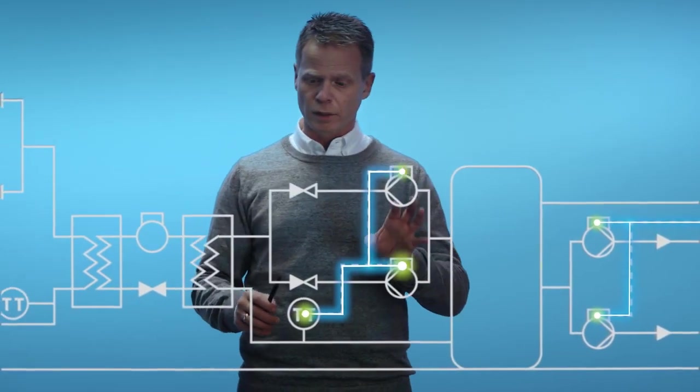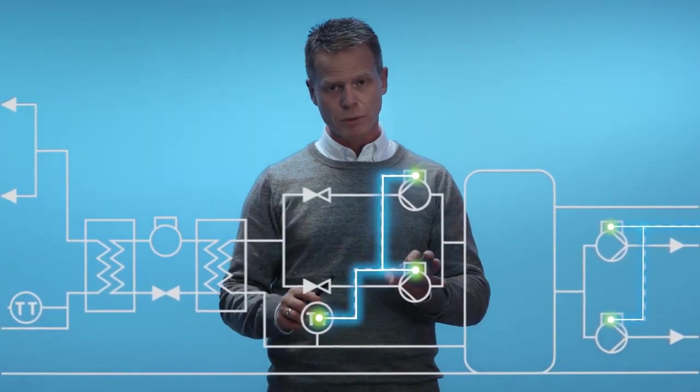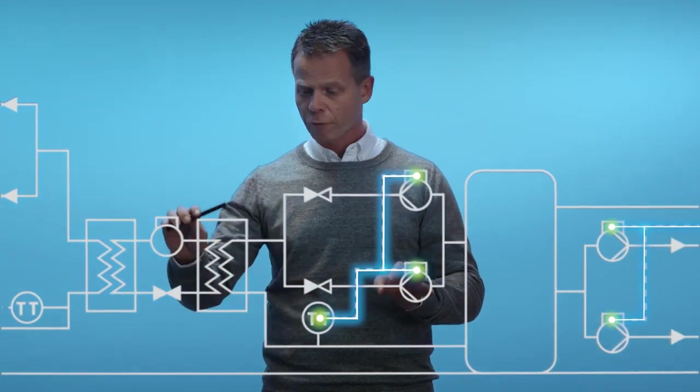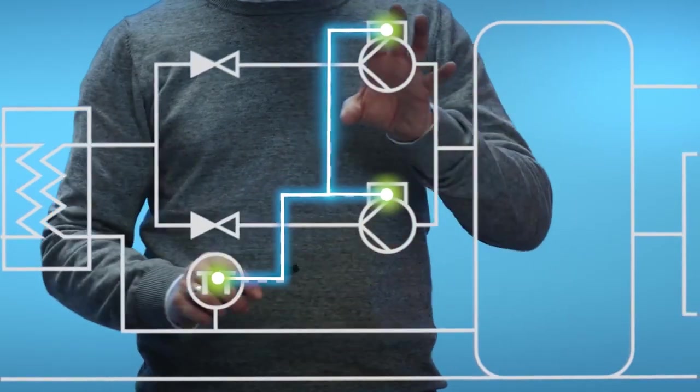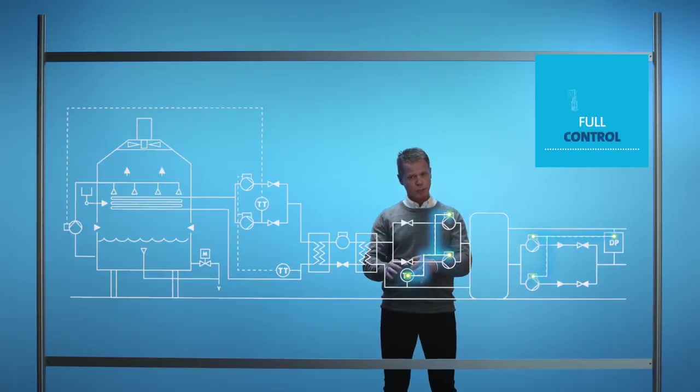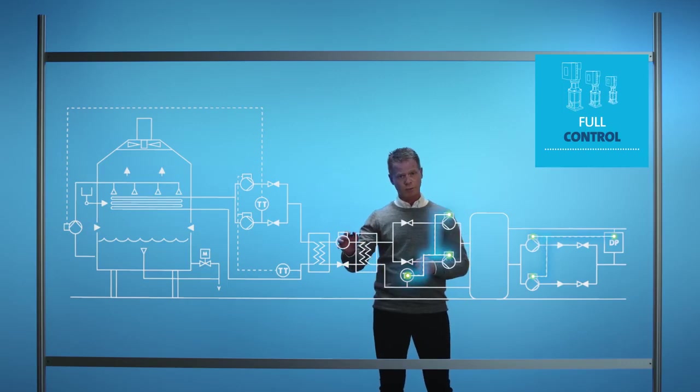Next, we have the chiller pumps. The chiller pumps are circulating cold water from the cold side of your chiller into your buffer tank. These pumps you can control either from a temperature sensor or from your chiller, so you